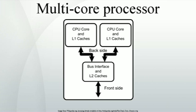A multicore processor implements multiprocessing in a single physical package. Designers may couple cores in a multicore device tightly or loosely. For example, cores may or may not share caches, and they may implement message passing or shared memory inter-core communication methods. Common network topologies to interconnect cores include bus, ring, two-dimensional mesh, and crossbar.